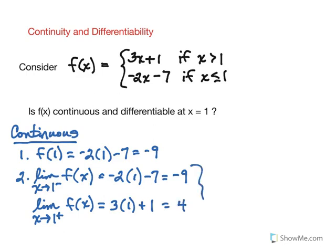So because of this we figure out that the limit does not exist, so it falls apart for continuity and this function is not going to be continuous at x equals 1.